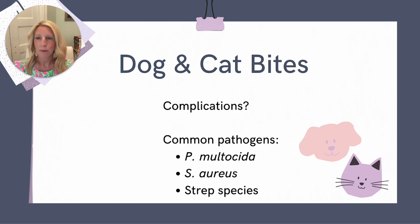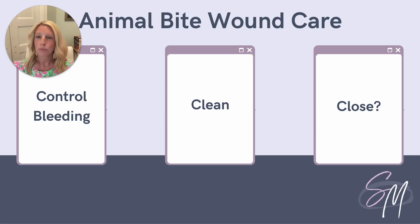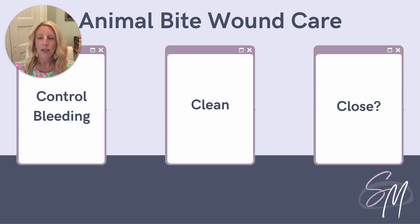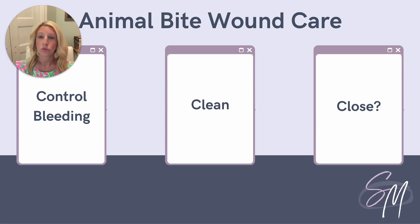Prompt and appropriate wound care is the most important factor to prevent infection in patients with animal bites. I like to think of these as the three C's. First, we have to control the bleeding. Next, we have to clean and irrigate the wound very thoroughly — we want to flush out all of that bad bacteria. For number three, do we close these wounds? Typically not. The majority of bite wounds should be left open to heal by secondary intention because the risk of infection is so high.